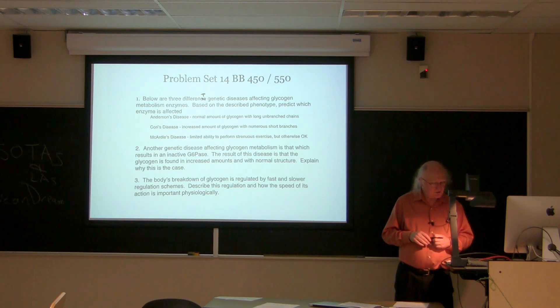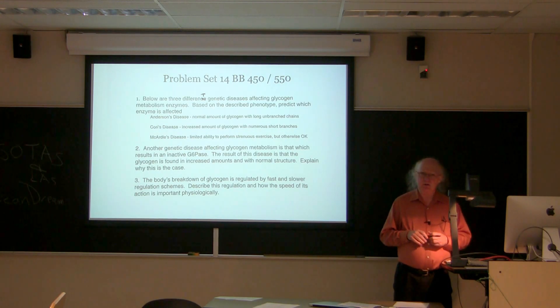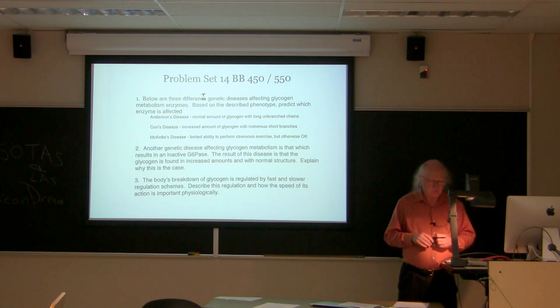Question two says another genetic disease affecting glycogen metabolism is that which results in an inactive G6Pase. The result of this disease is that the glycogen is found in increased amounts with normal structure. Explain why this is the case.